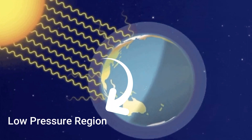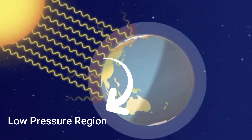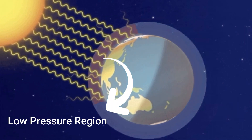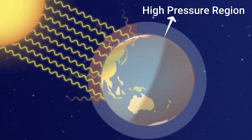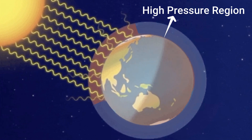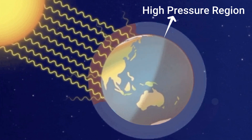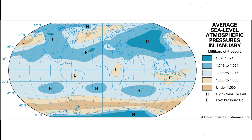Generally, low pressure regions are formed where there is warm air, and high pressure regions are formed where there is cold air, like in polar regions. Apart from this, some high pressure regions are formed in the extratropical regions due to Coriolis force.